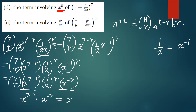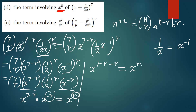When multiplying two indices with the same base, you add the powers. So we get x raised to the power 7 minus r plus negative r, which gives us x to the power 7 minus r minus r. We equate this to x to the power 5. Since the bases are the same, the powers must also be equal, so we have 7 minus r minus r equals 5.